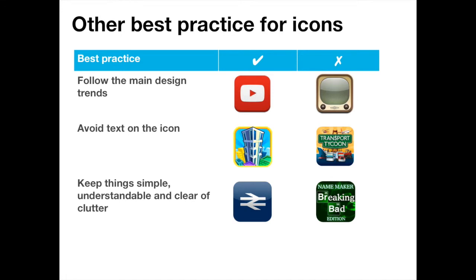What is the other best practice for designing icons? The major piece of best practice is to follow the main design trends. On the left and right, we've got the YouTube iOS app icon post and pre iOS 7. iOS 7 really introduced flat design and threw skeuomorphism out of the window. Importantly, these design habits don't just stay on iOS — they get ported out to places like Google Play and other stores. So it's interesting to see how YouTube discarded their old skeuomorphic television-style icon in favour of that engaging flat design. It's something you should bear in mind while you're designing your app.